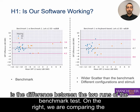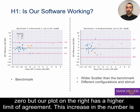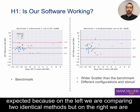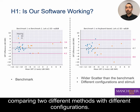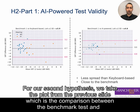On the left we have our gold standard, which is the difference between the two runs of the benchmark test. On the right we compare the keyboard-based test to the benchmark test. Both have a mean close to zero, but the plot on the right has a higher limit of agreement — this is expected because on the left we are comparing two identical methods, while on the right we are comparing two different methods with different configurations.